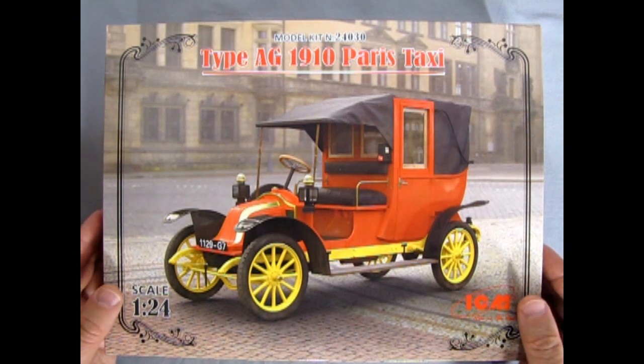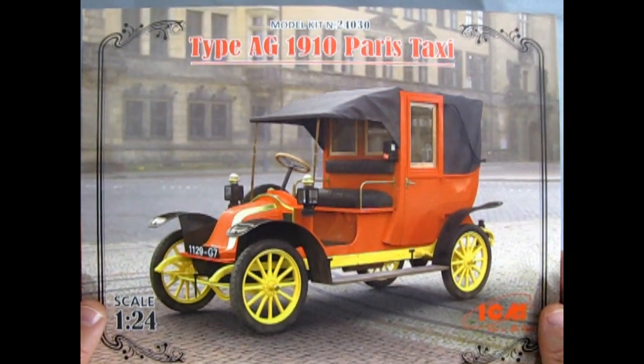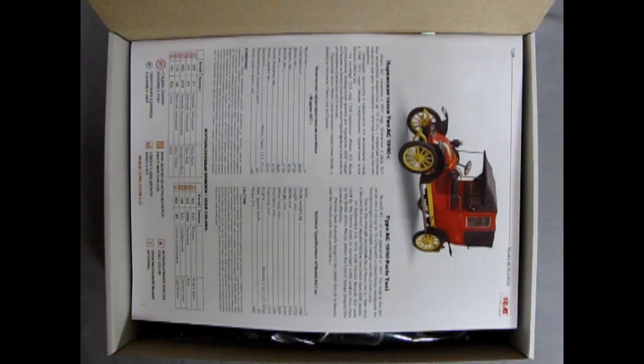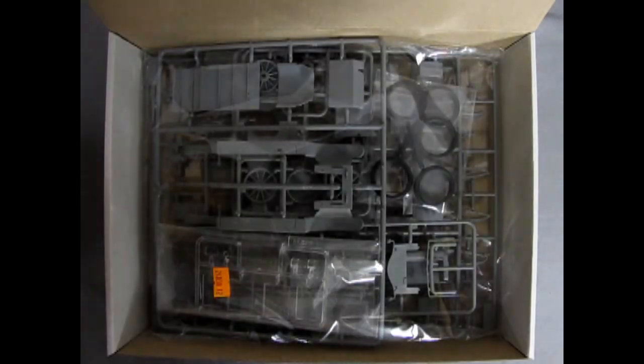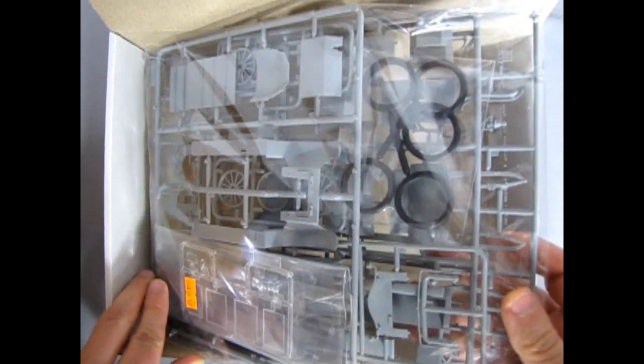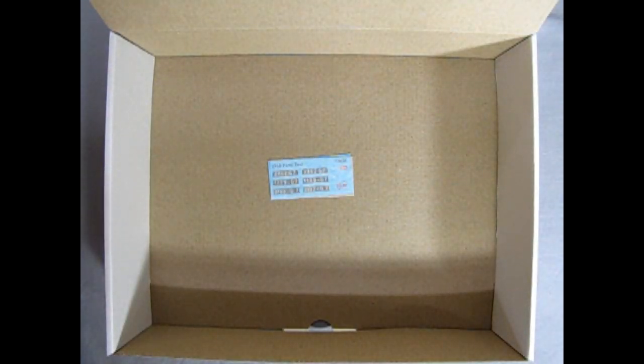ICM model kits are unique in that the artwork on the box is just a cardboard sleeve for the thick box board box underneath. ICM includes a colorful instruction sheet. All components are in one big bag with multiple bags inside, and a decal sheet.